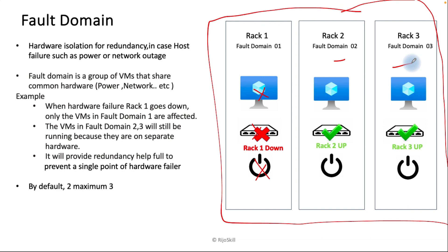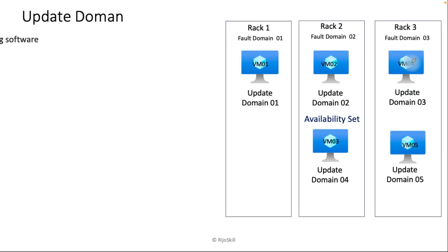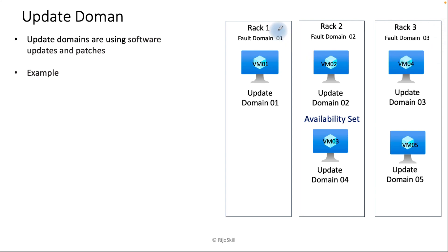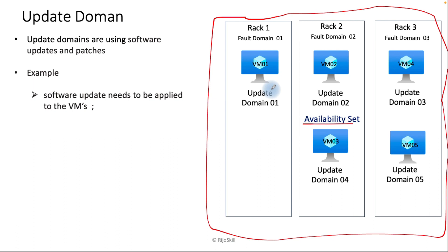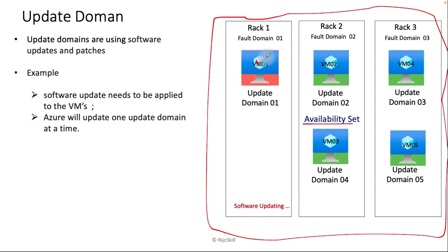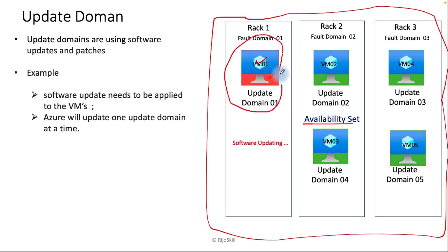The fault domain provides hardware redundancy — if there's a power outage, network failure, or hardware failure, you still have fault domain two and three available. The maximum fault domains by default is two, and you can provide up to three. Next, the update domain is mainly concerned with software updates for the host. When you want to update all virtual machines in the availability set, the update domain controls that process.